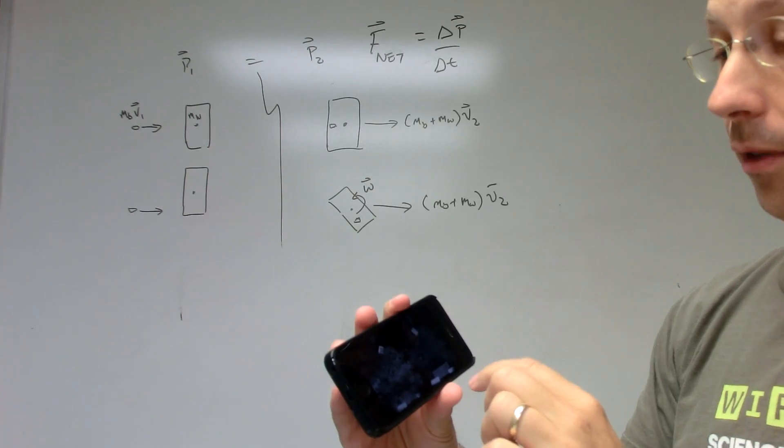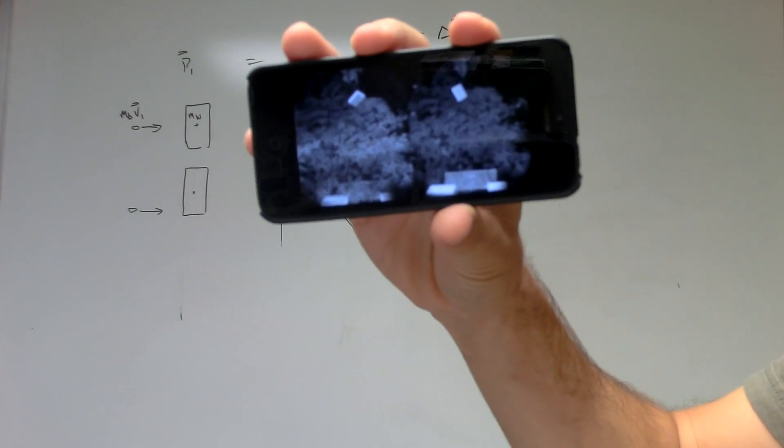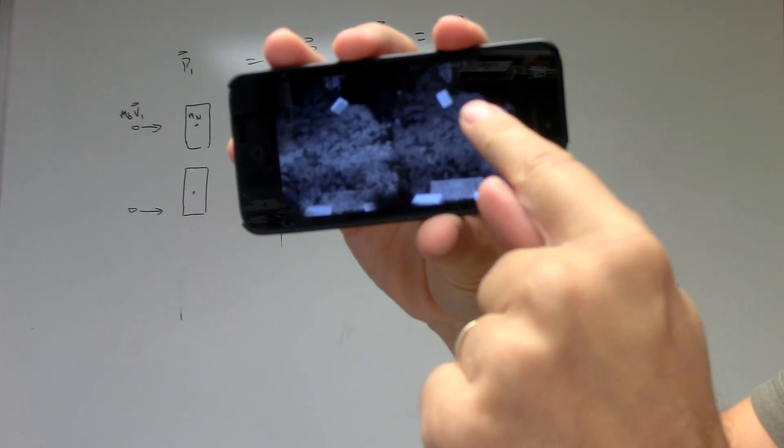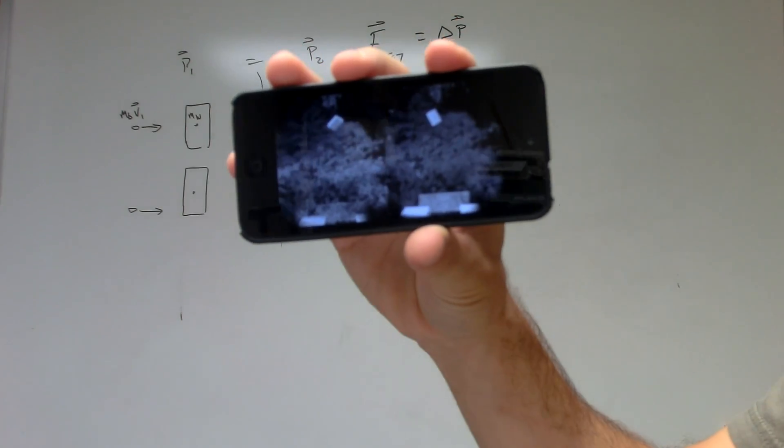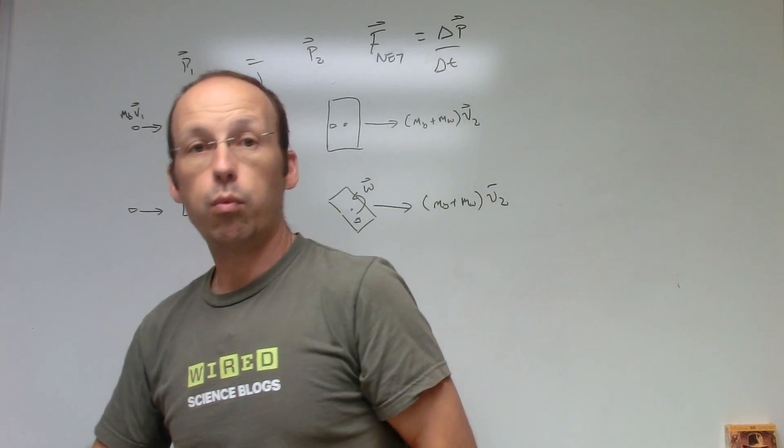So here's the picture showing the two blocks. This is the spinning block, and that's the one hitting the middle, and they go the same height. So the question is, why?